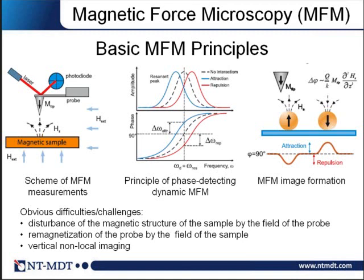The probe can even cause remagnetization of the sample. On the other hand, the sample itself can influence the magnetic structure of the probe and even remagnetize the probe. Also important for further discussion: since the dipole fields are non-local, this technique is not only surface-sensitive but also has sensitivity for layers below the surface, so you can image buried layers.